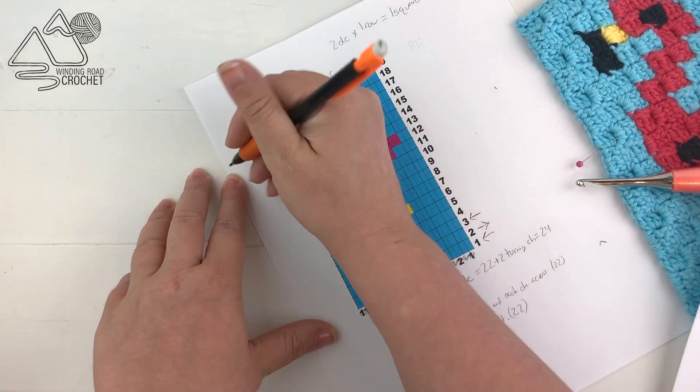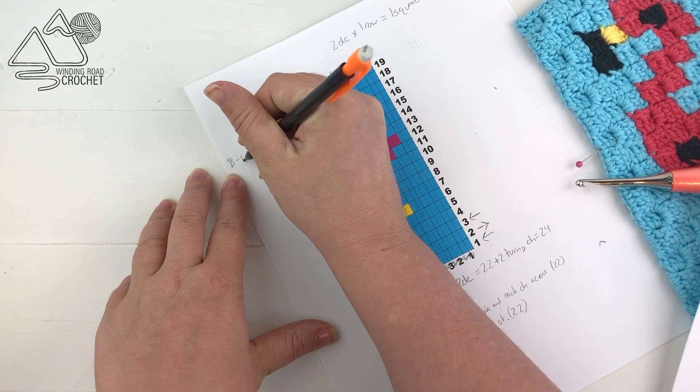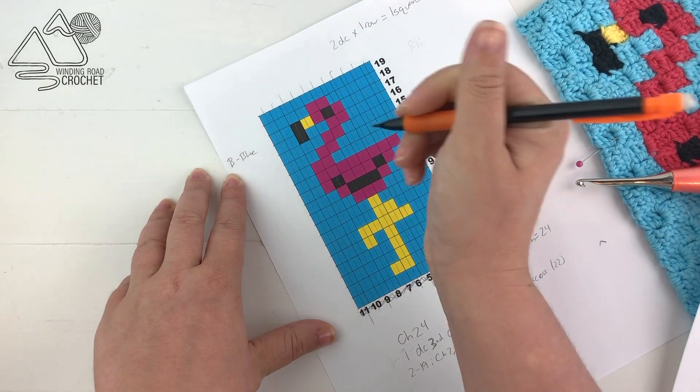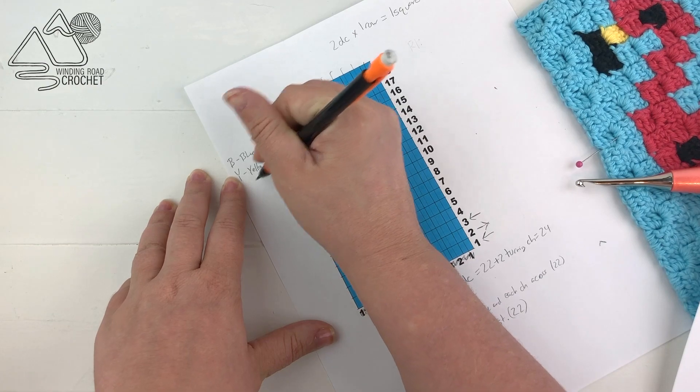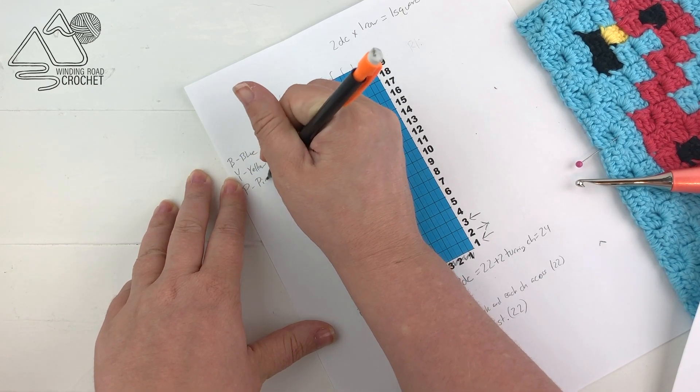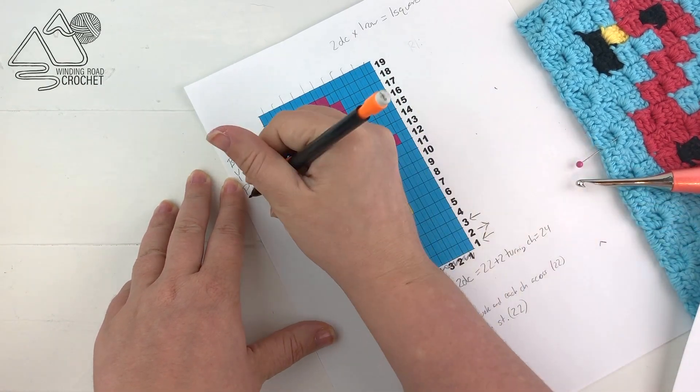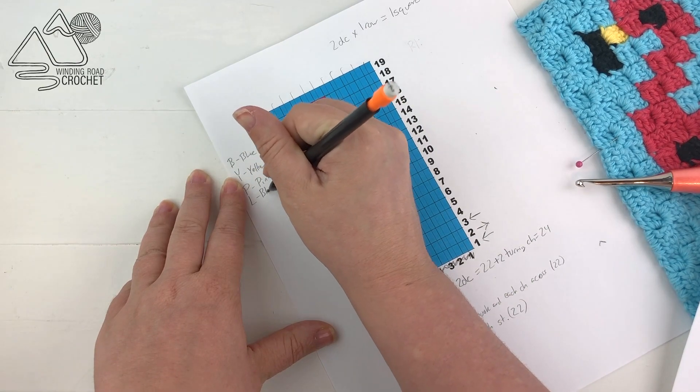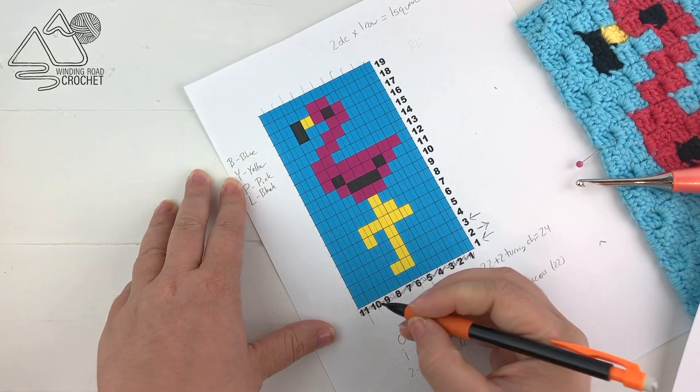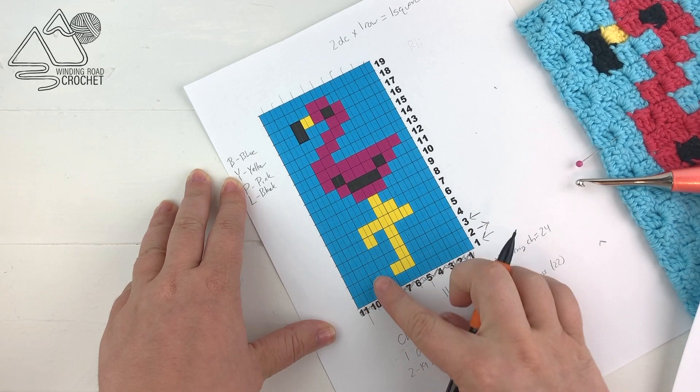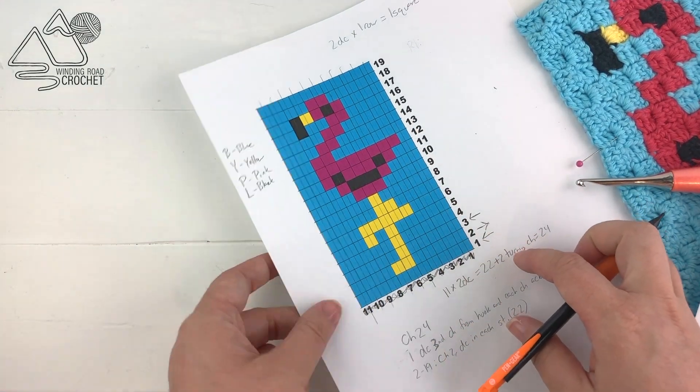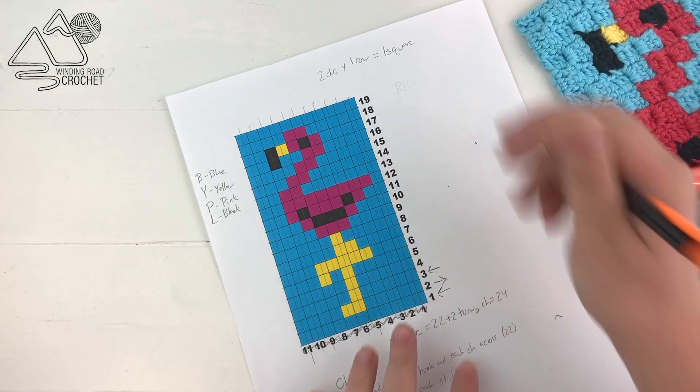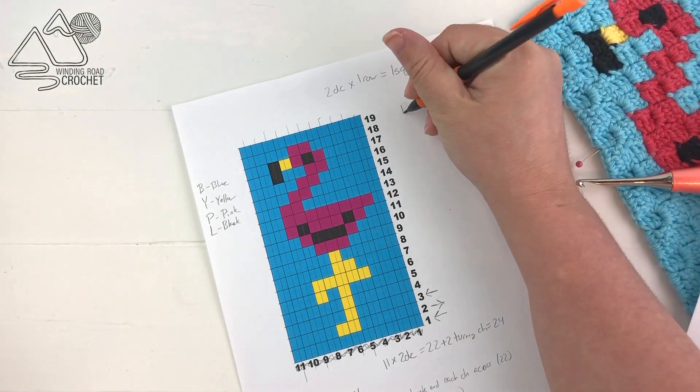So the next thing we're going to do is we're going to actually write out the pattern for our project using the color changes. And this is pretty commonly done with corner to corner crochet as well. The first thing I'm going to do is write a key off to the side. I'm using B for blue, Y for yellow, P for pink, and L for black. And I'm going to use this to indicate how many double crochet in each row I am going to be working in a specific color.